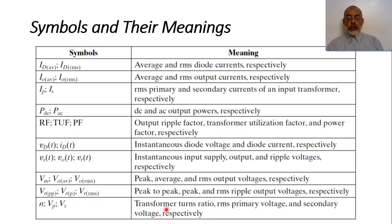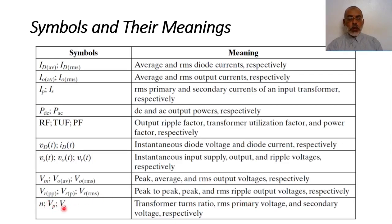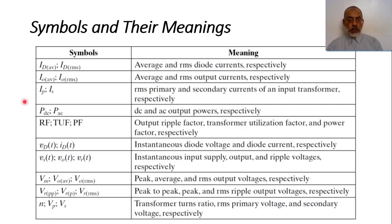N is the transformer turns ratio, which is N primary to N secondary. Vp is the root mean squared of the primary voltage of the transformer, and Vs is the root mean squared of the secondary of the transformer. These are the basic symbols which we are going to use in our course.